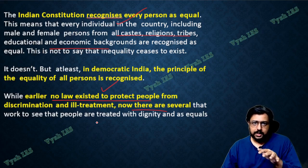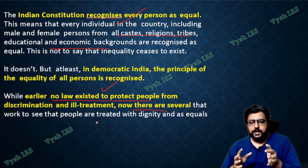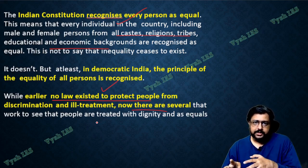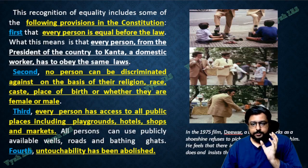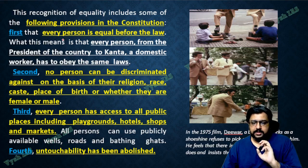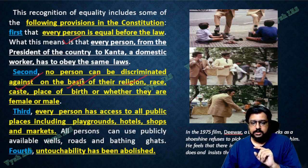This wealth distribution idea — take money from one person and give it to another — doesn't work. That is called socialism, which is a failed concept. You cannot take money from a hardworking person and give it to a lazy person. You have to give equally as per the work they do. That is the difference between equality and equity. The constitution provisions on equality include: every person is equal before the law — from the president to a domestic worker. Nobody can be discriminated based on religion, race, caste, place of birth, or gender — these five things written in Article 15.